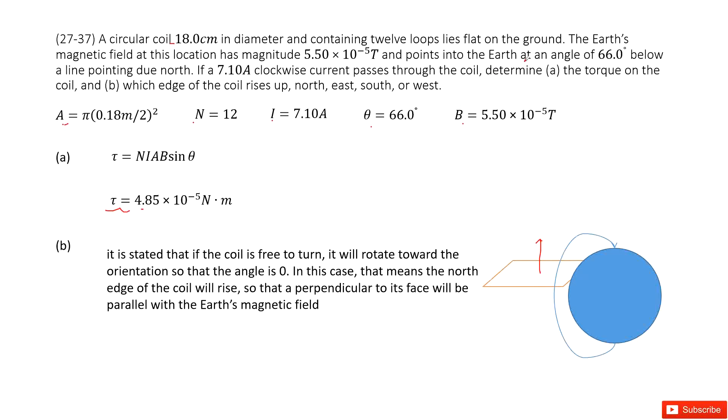So initially, it is at 60 degrees. Then it rotates this way. So of course, we can see the north edge of the coil will rise so the perpendicular to its face will be parallel to the earth's magnetic field.